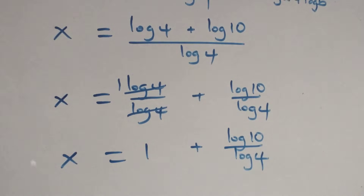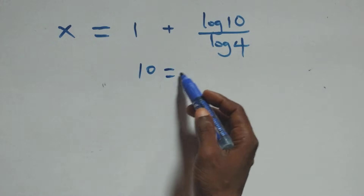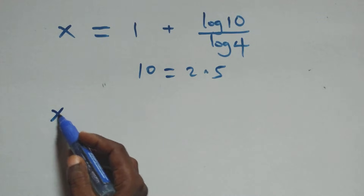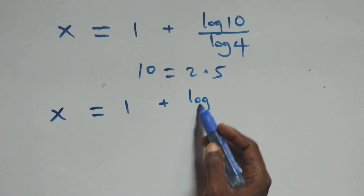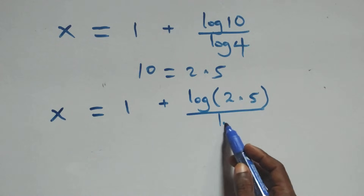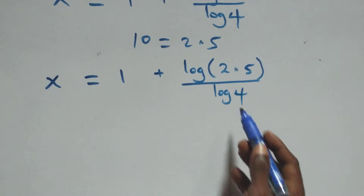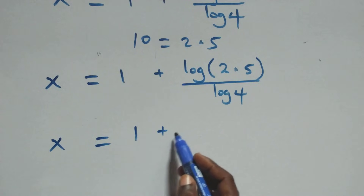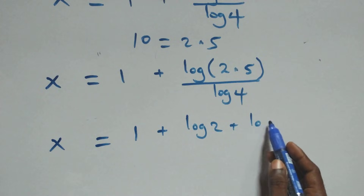Then next step here. Also, 10 can be written as 2 times 5. So what we have becomes x equals to log(2 times 5) over log 4. This also follows the law of logarithms.